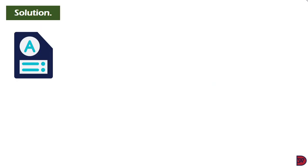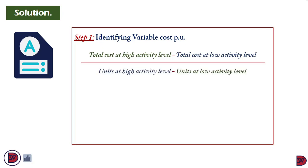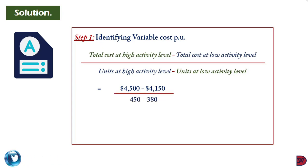Step one: identify the variable cost per unit. We find the difference between the total cost at the highest activity level and the total cost at the lowest activity level, divided by the difference in units. The highest activity level total cost was $4,500 (450 units) and the lowest was $4,150 (380 units). Variable cost per unit = $350 ÷ 70 = $5.